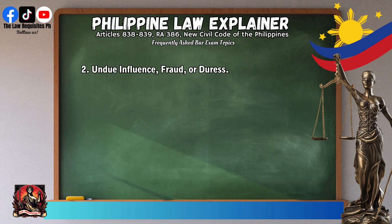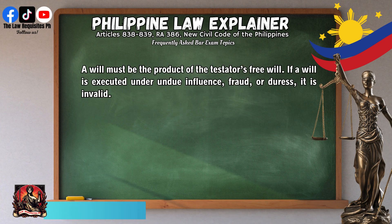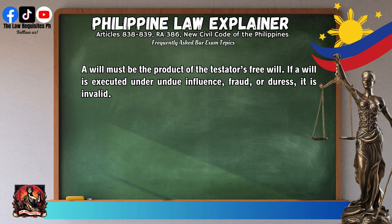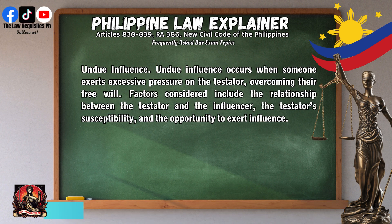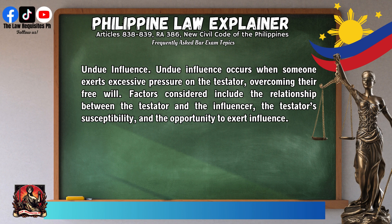Second, undue influence, fraud, or duress: a will must be the product of the testator's free will. If a will is executed under undue influence, fraud, or duress, it is invalid. Undue influence occurs when someone exerts excessive pressure on the testator, overcoming their free will. Factors considered include the relationship between the testator and the influencer, the testator's susceptibility, and the opportunity to exert influence.